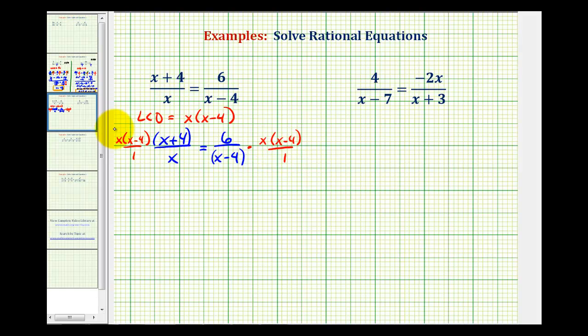Notice on the left side, we have a factor of x over a factor of x. This simplifies to 1, and on the right, we have a factor of x minus 4 over a factor of x minus 4. So now we're left with the quantity x minus 4 times the quantity x plus 4 equals 6 times x.